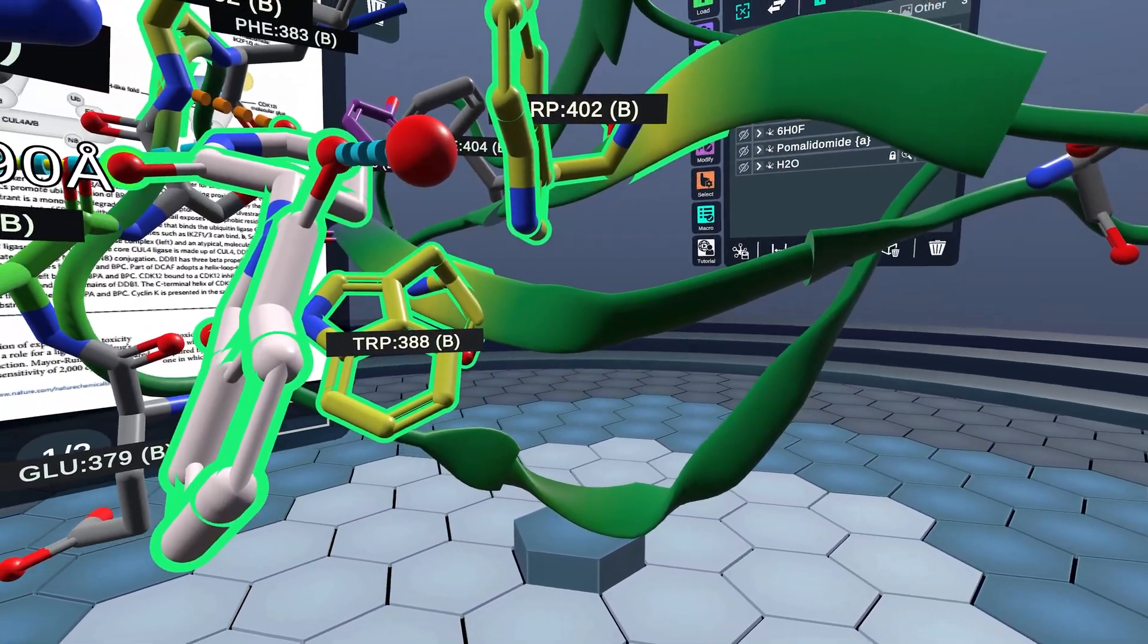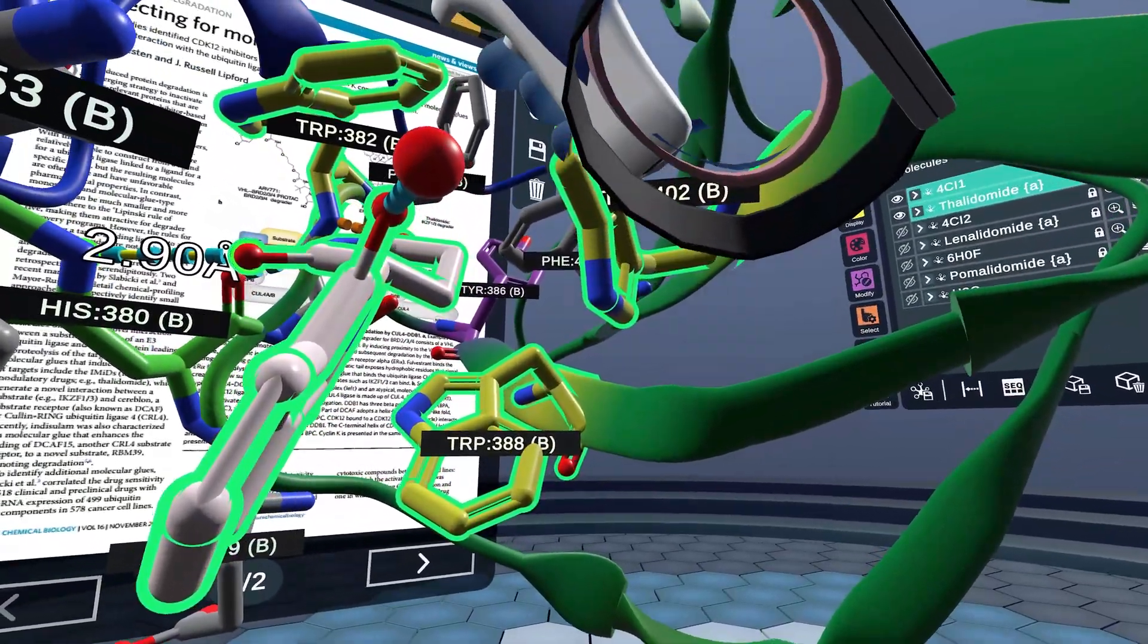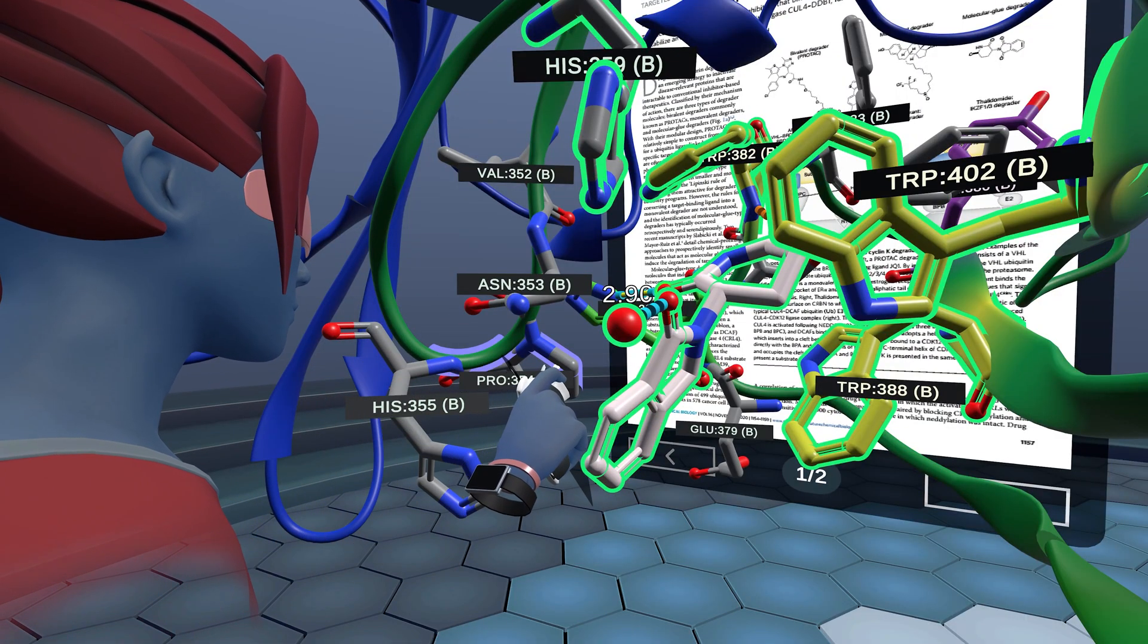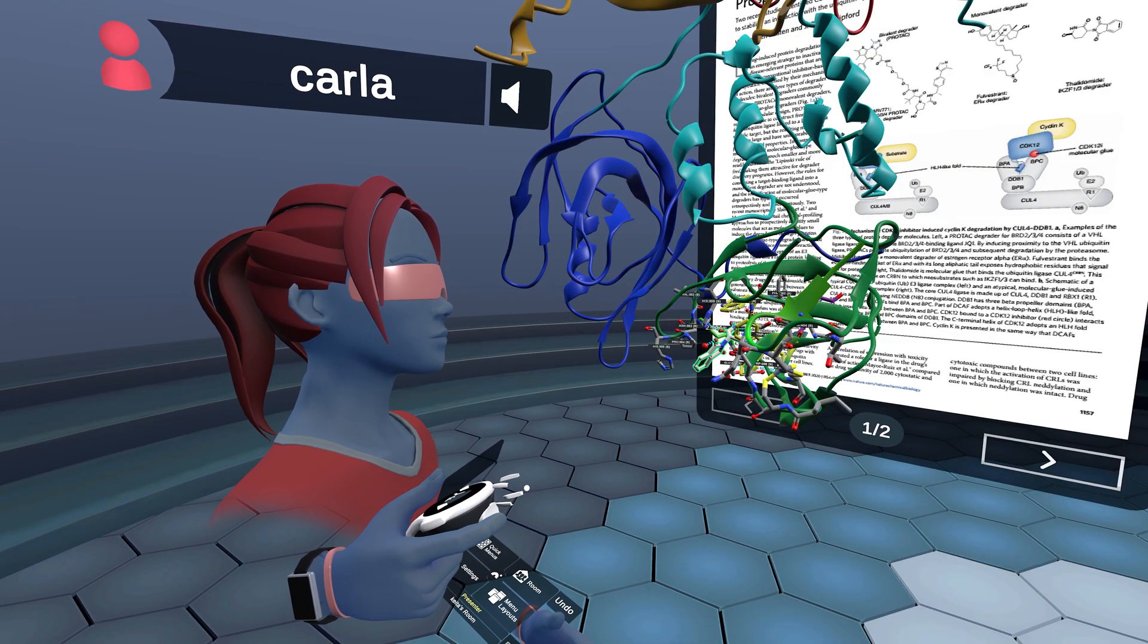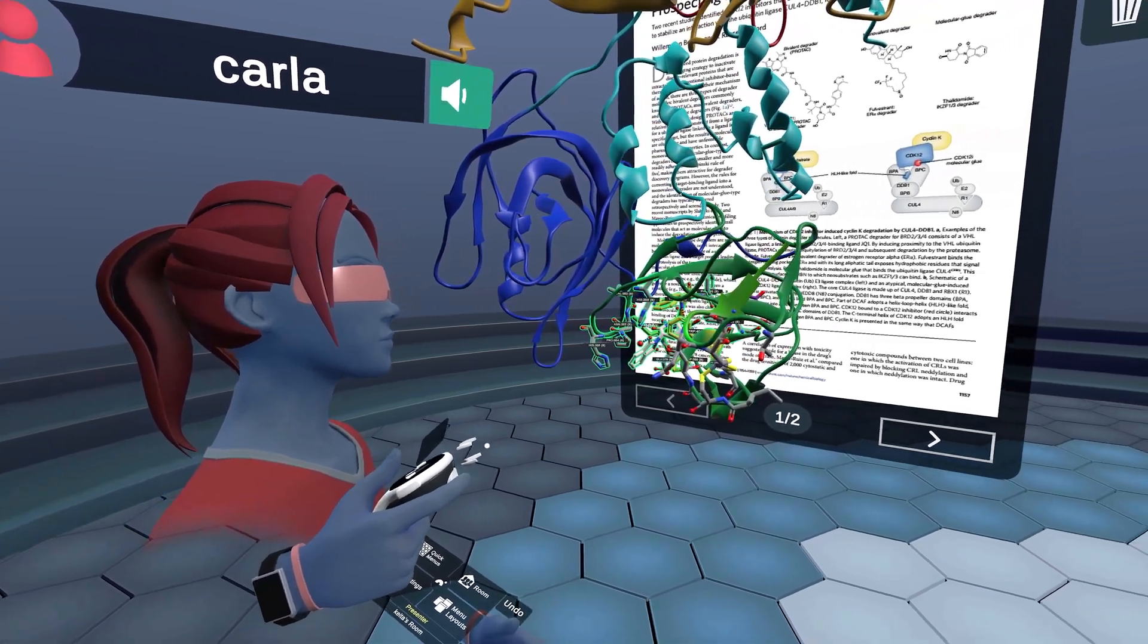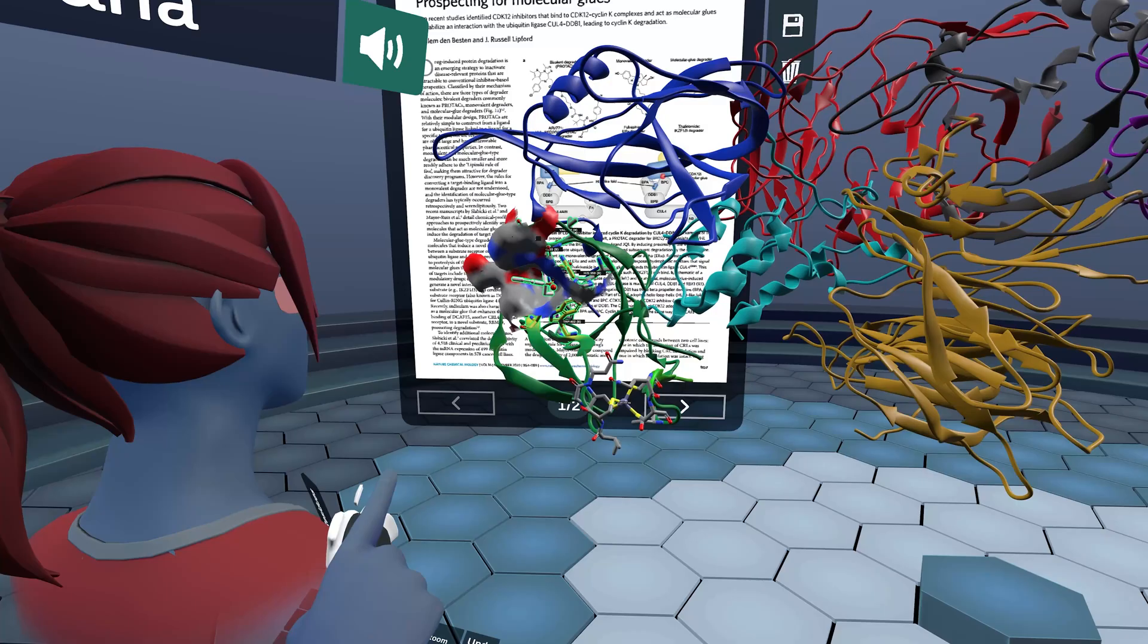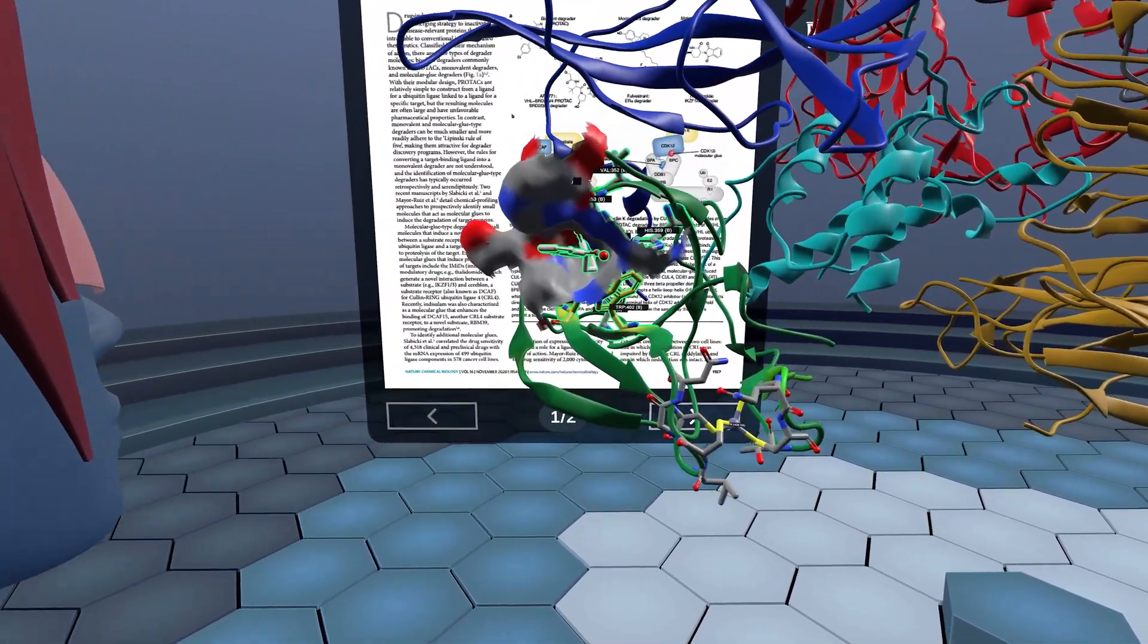The phthalimide moiety of thalidomide contacts histidine 359 up here in the front via this water molecule, and forms a hydrophobic interaction with proline 354. I'm going to select the ligand here and do a binding site surface representation using Nanome's select tool and display tool. Here you can see a surface representation of the binding pocket where polar interactions are represented in blue and red, and the hydrophobic interactions are in gray.